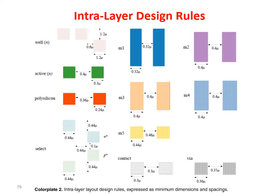When you put subsequent process steps, you put one layer on top of the other. Sometimes you want things to be aligned, but in order to be aligned you need to make them not too small. That is why you also have interlayer design rules.